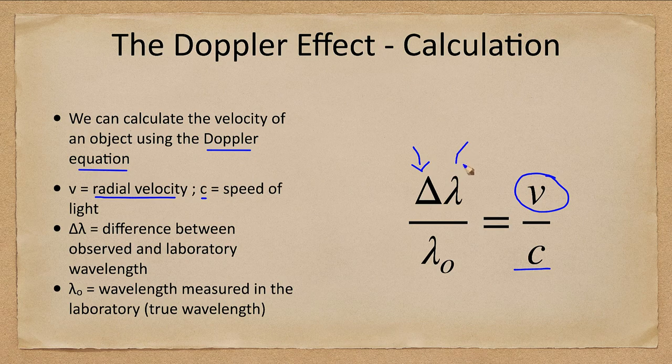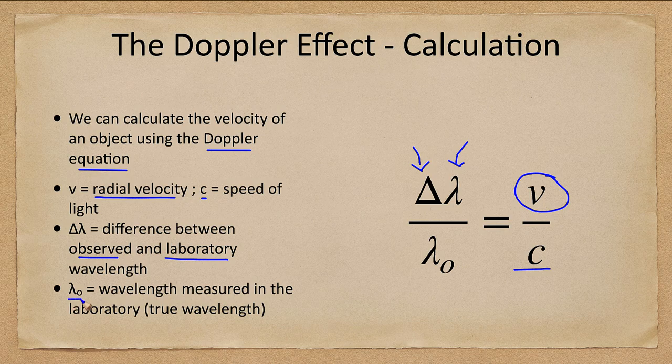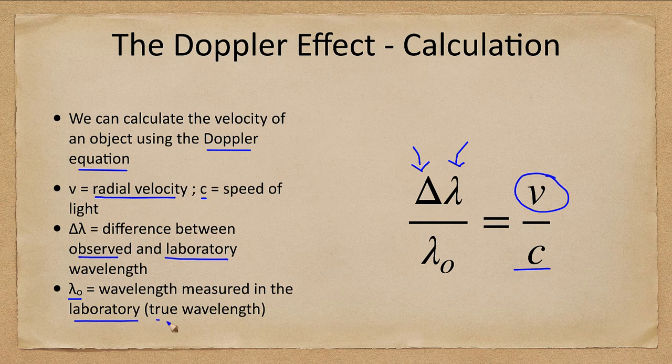The lambda, the upside down Y, means wavelength. So the change in wavelength. That's the difference between what is observed and what we see in the laboratory. And the lambda with the subscript of zero means the wavelength measured in the laboratory. So that is the true wavelength, the wavelength that the atoms are giving out with no velocity change.